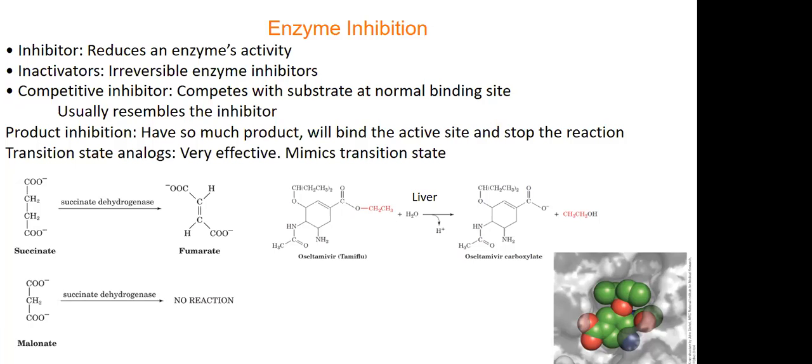And your best competitive inhibitors look like your normal substrate. And so that's the pictures we have down here. For succinate dehydrogenase, it works on succinate. A competitive inhibitor is malonate. They look very similar with the difference of one CH2 unit. So malonate can bind, but you will have no reaction. So this is a competitive inhibitor.